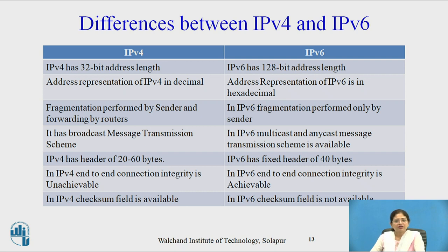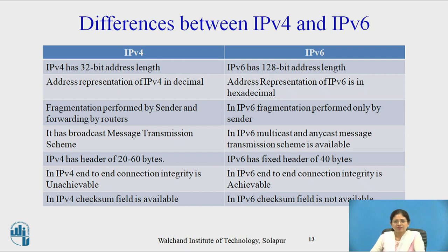In IPv4, end-to-end connection integrity is unachievable, whereas in IPv6 end-to-end connection integrity is achievable. The last difference: in IPv4 the checksum field is available, whereas in IPv6 the checksum field is not available — that means the checksum field is absent from the IPv6 header format.